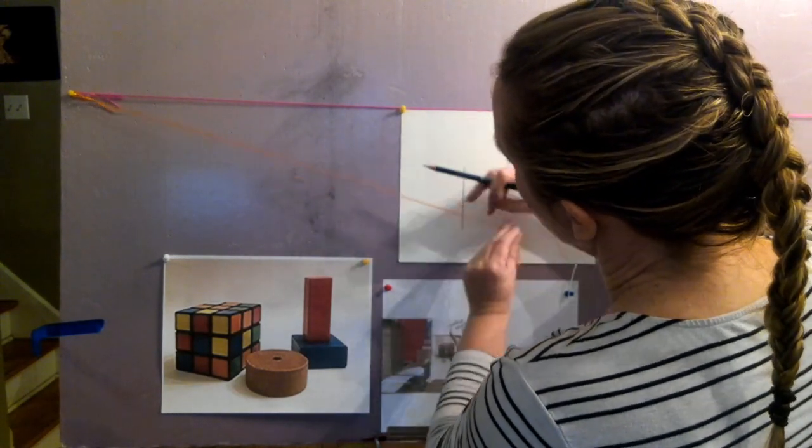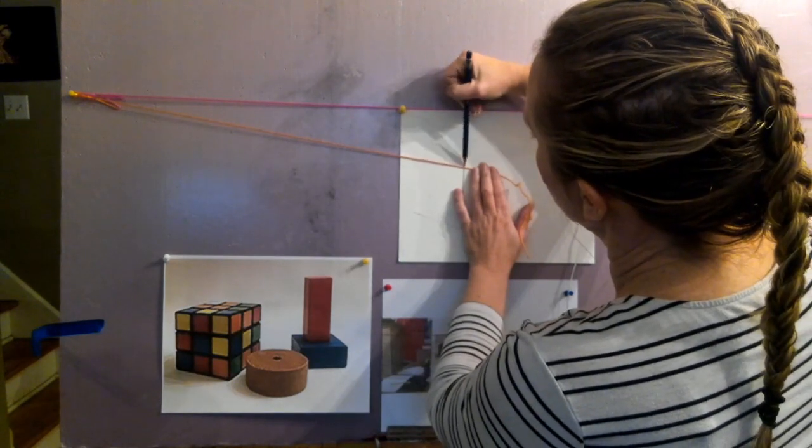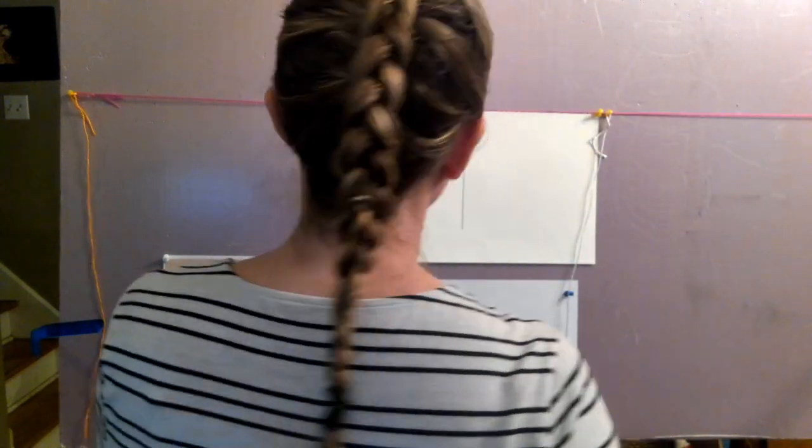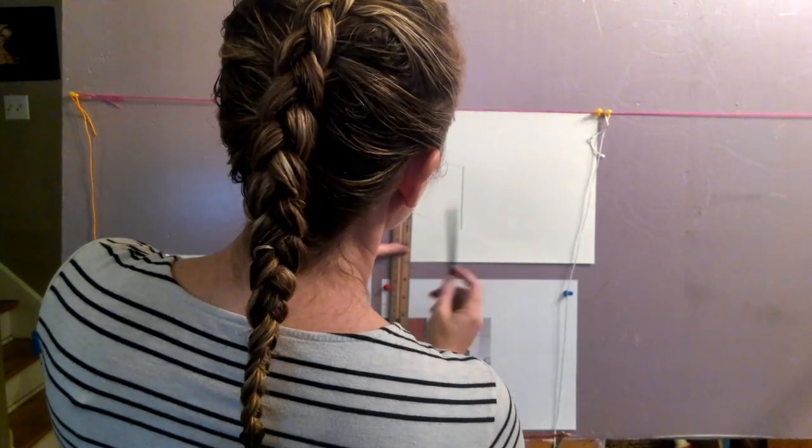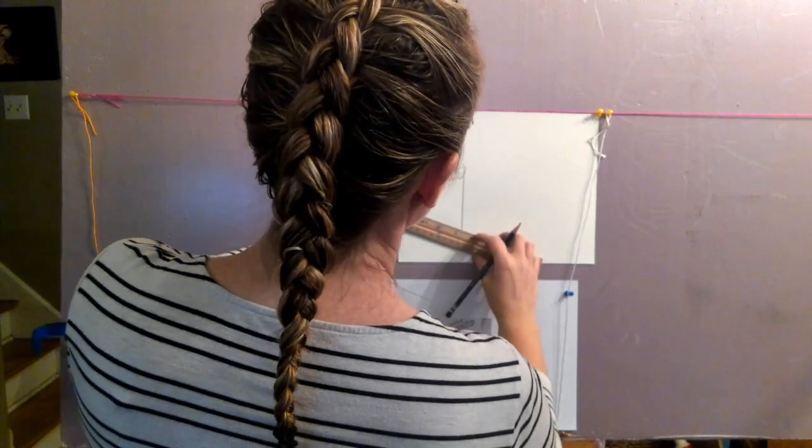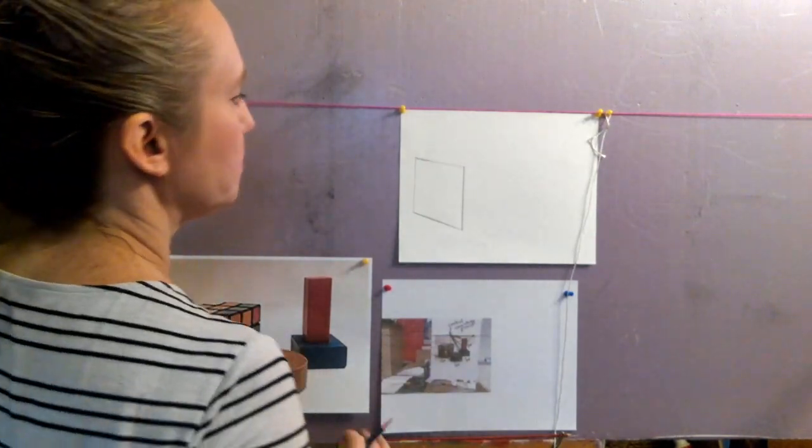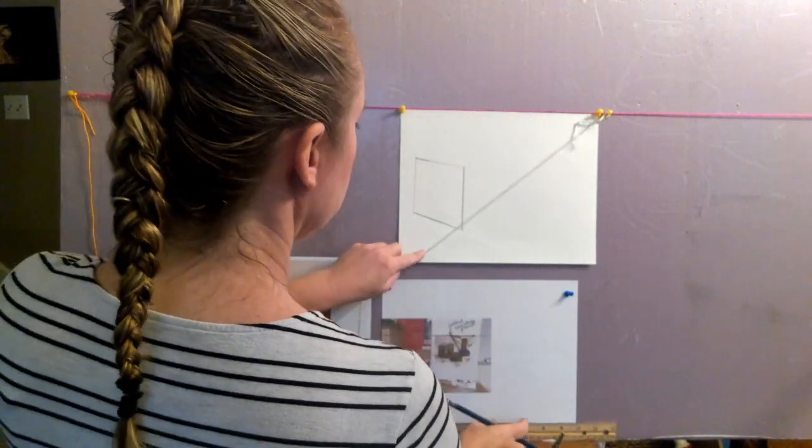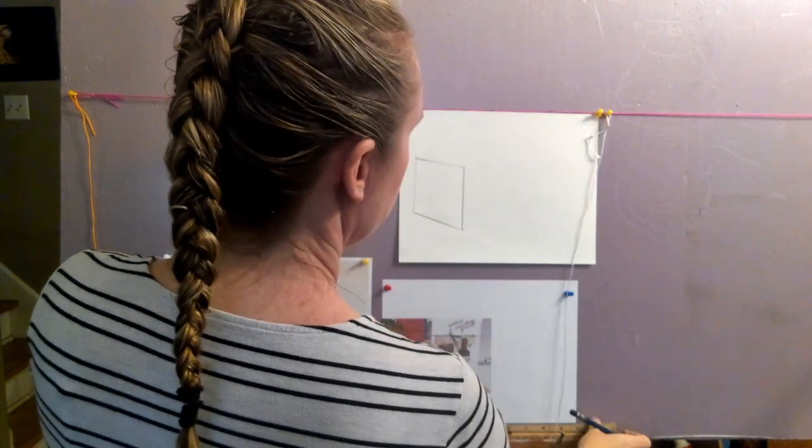Now I'm drawing that in, and I use the sighting stick to find that. I want to make sure that this is parallel with the side of the piece of paper. Make sure your verticals are parallel. I'm darkening it right now just so that you can see it, but when you draw it, draw it really light.